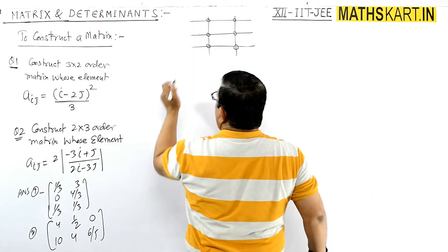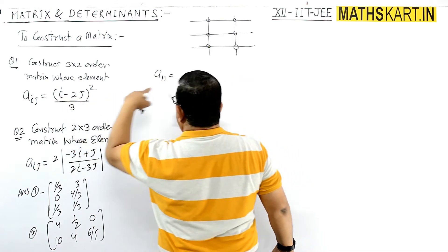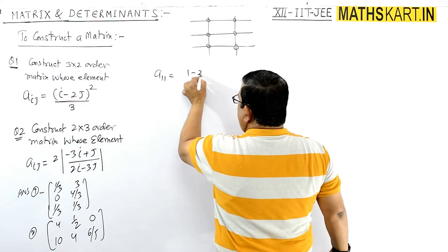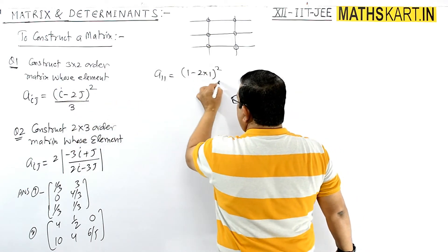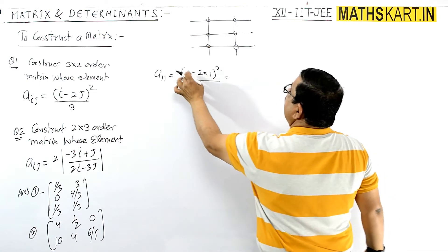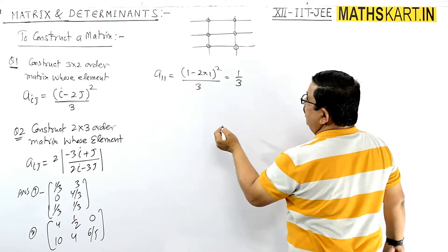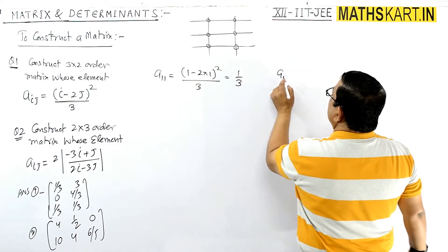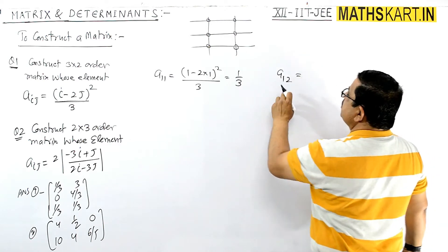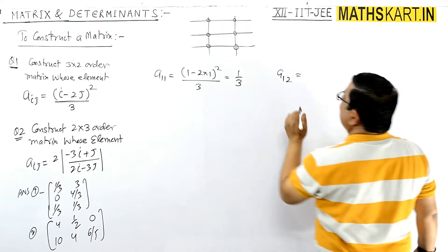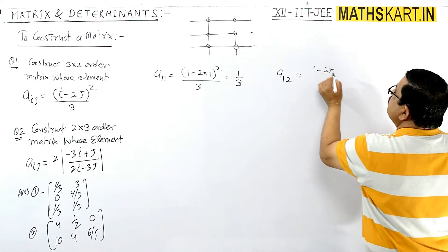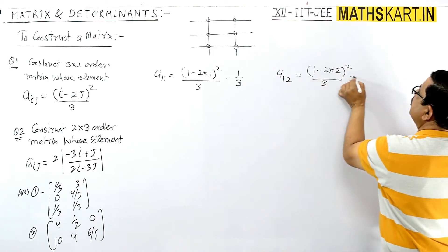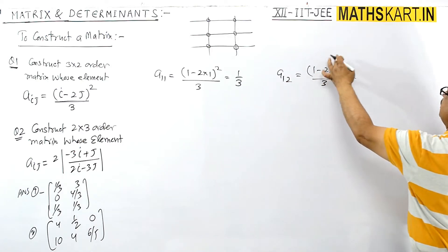First, we find A11: put i=1, j=1 → (1 minus 2×1) whole square by 3 = (1−2)² / 3 = 1/3. For A12 — first row, second column — i=1, j=2: (1 minus 2×2) whole square by 3 = (1−4)² / 3 = 9/3 = 3.